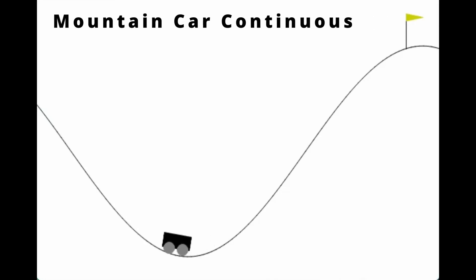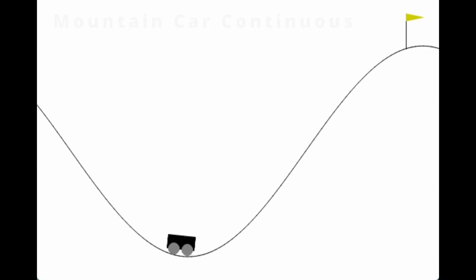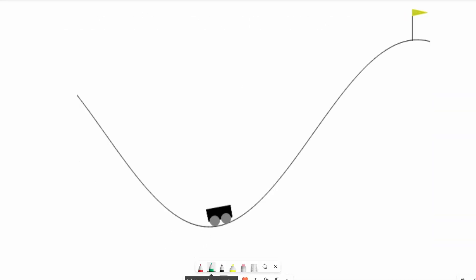I tried training mountain car continuous and after training it just got stuck at the bottom. Let's talk about why, and how to get the agent to train. A quick reminder of how we approach solving mountain car with Q-learning.